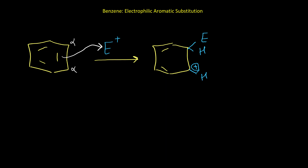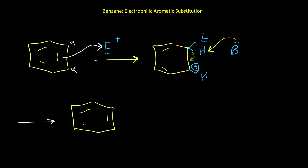The system doesn't like to be in this state and wants to regain aromaticity. This cation is not alone — it has an anion. That anion, which I'll call B (acting as a base), can come and take this hydrogen. The electrons from that hydrogen come back to the ring and restore the benzene structure.